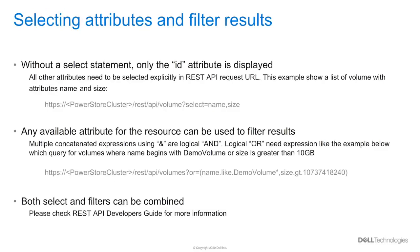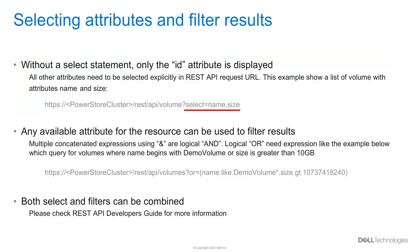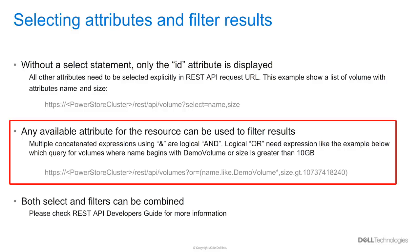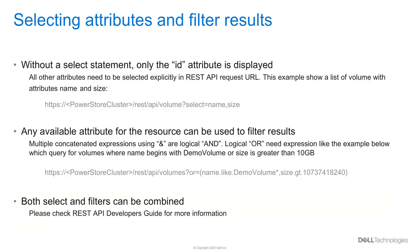Now we know the basics to use PowerStore's REST API — the URL and exchange format. The slide shows selecting the right attributes and using server-based filtering to limit the number of responses and load on the REST server and client. PowerStore just shows the object ID attribute in queries when not selecting attributes explicitly. In your own scripts, you may want to get also the name and size of a volume. For that, we use the SELECT statement with attributes you want: SELECT=name,size. The REST API implementation also supports server-based filtering — for example, filtering for a volume beginning with 'demo_volume' and a size greater than 10 GB. Note that we are working with multiples of a kibibyte. Both attribute selection and filtering can be combined in one request divided with an ampersand. For more detailed information, please check the PowerStore REST API developer's guide.